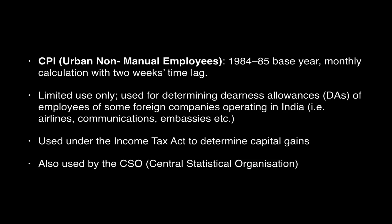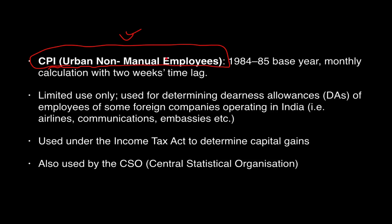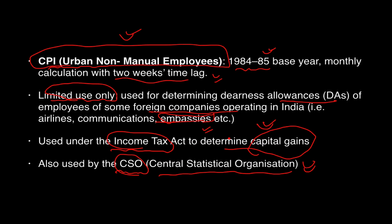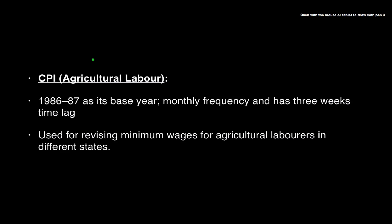CPI for Urban Non-Manual Employees has 1984 as its base year, with monthly calculation and a two-month lag. It has limited use — it is used for determining DA for some foreign companies like embassies, and also by income tax authorities for the calculation of capital gains. It is also used by the Central Statistical Organisation (CSO).